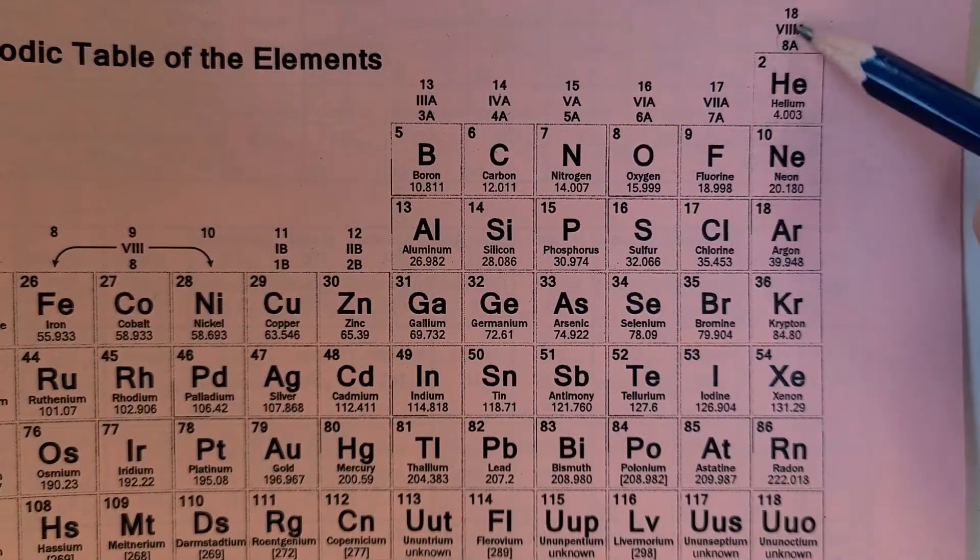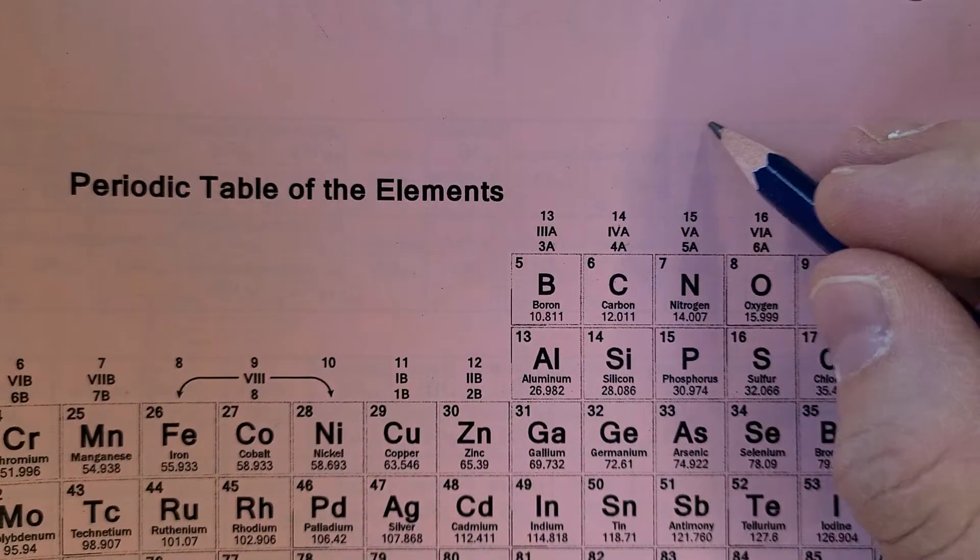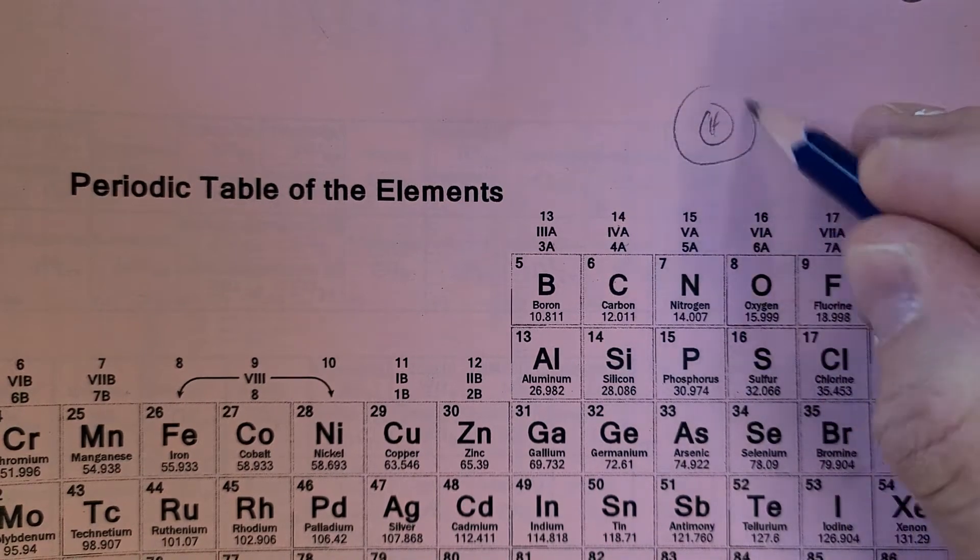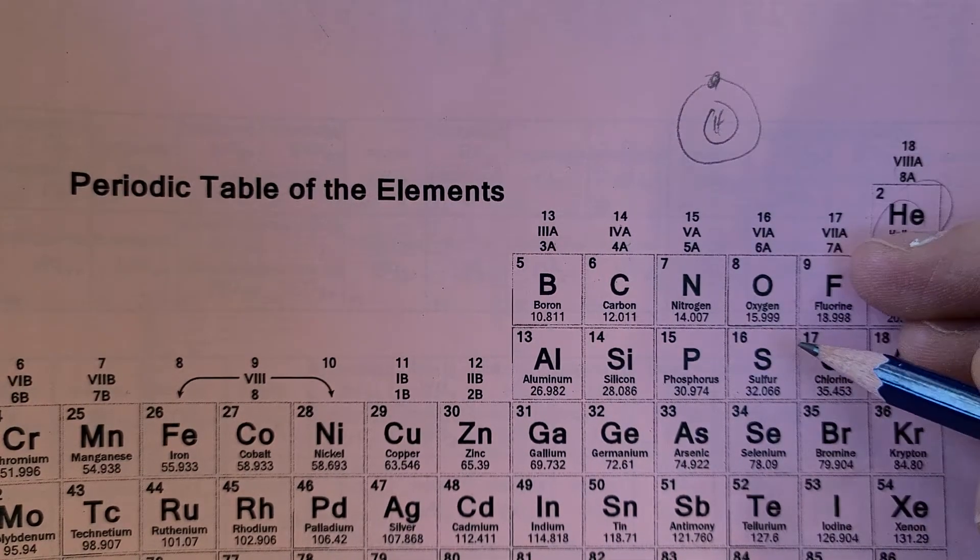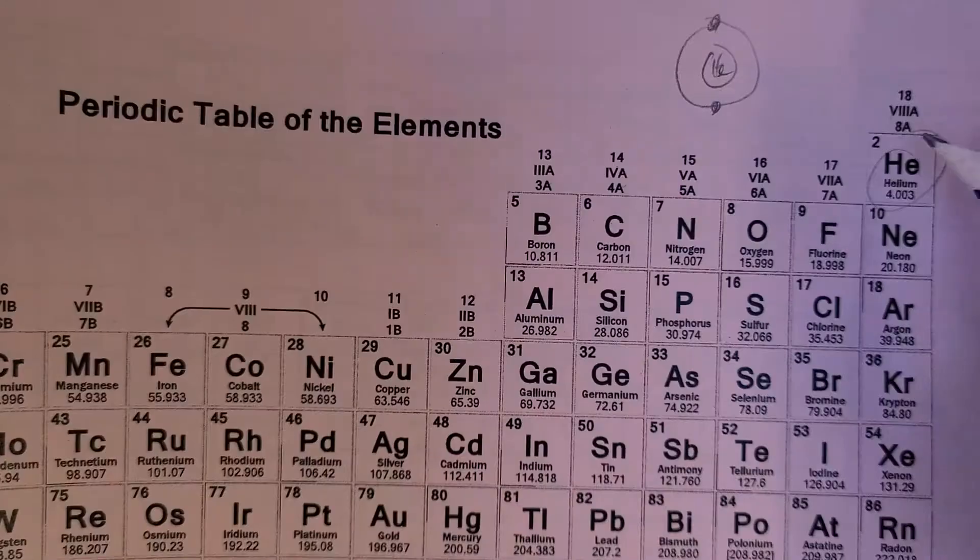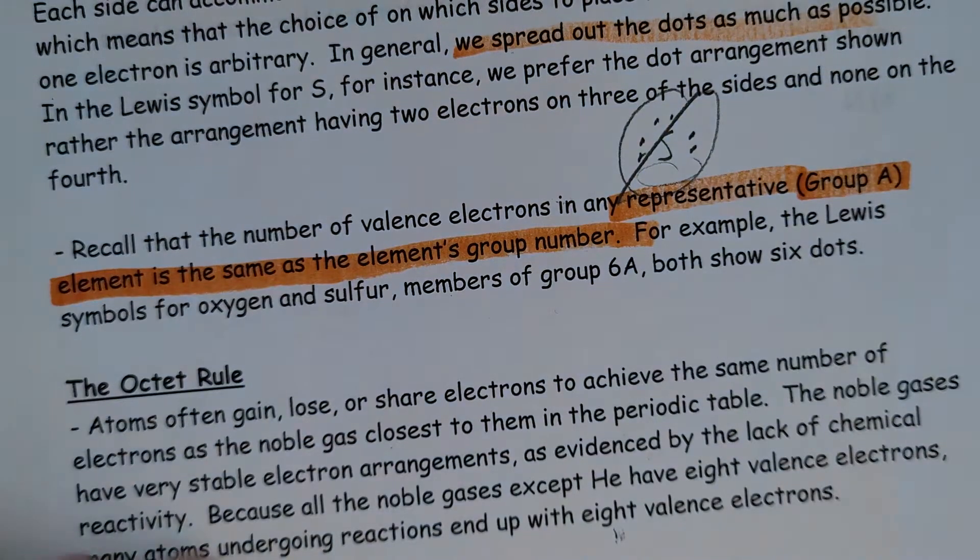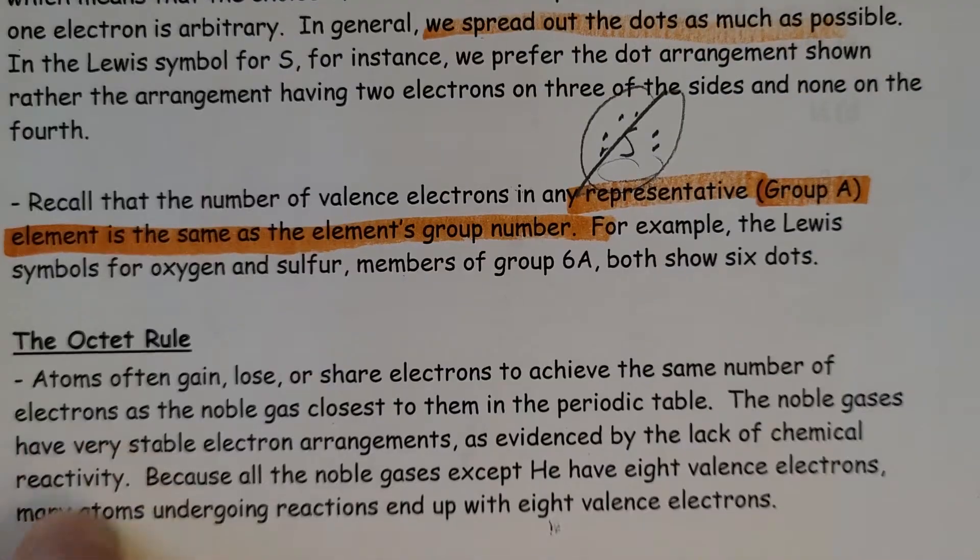8A would have eight in their outer level, with the exception of helium. The hydrogen atom has one level with one electron, and helium would have two, so it has a maximum of two only, whereas the rest of them have a total of eight. You can easily see how many valence electrons by simply looking at the group number.